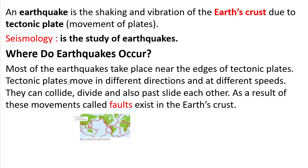Tectonic plates move in different directions and at different speeds. They can collide, divide, and also pass each other — that means move horizontally. As a result of this movement, faults exist in the Earth's crust, and that is where earthquakes happen on the surface.